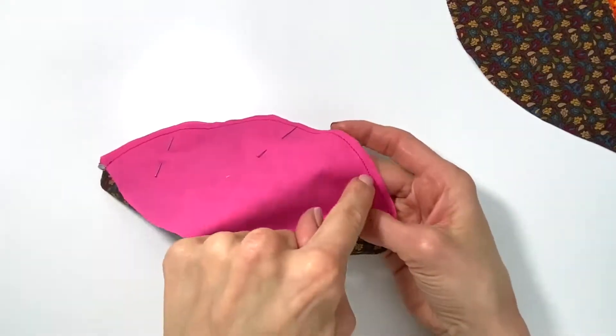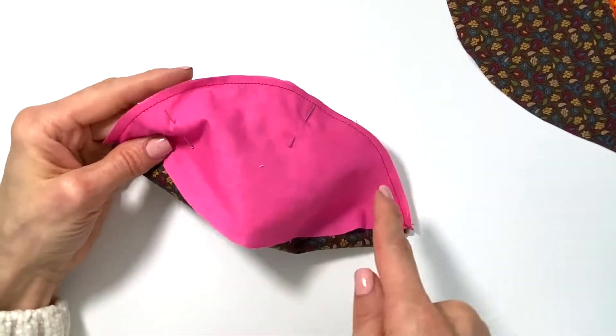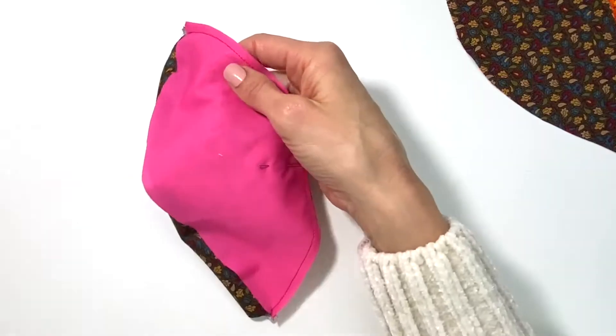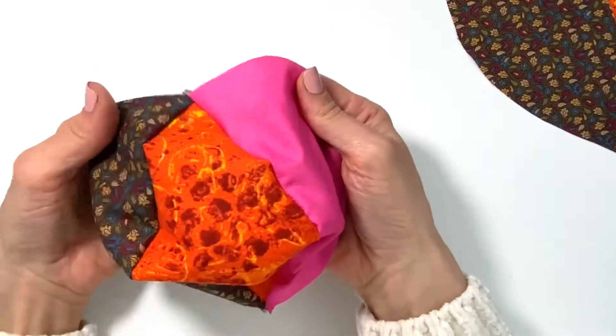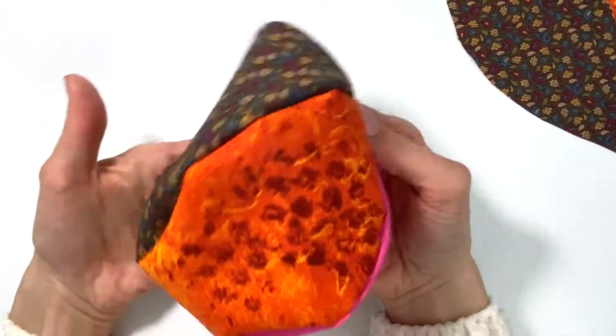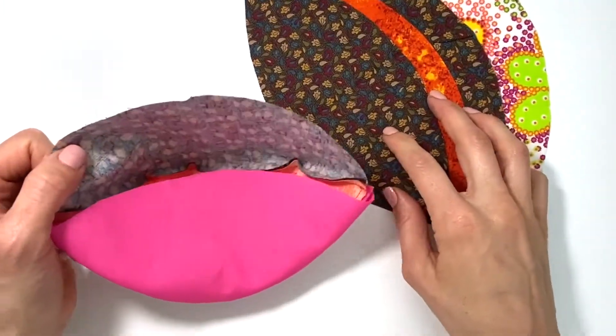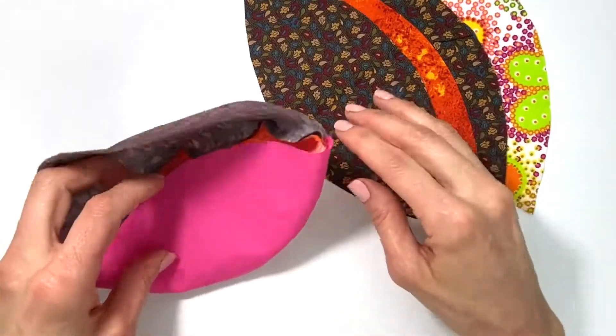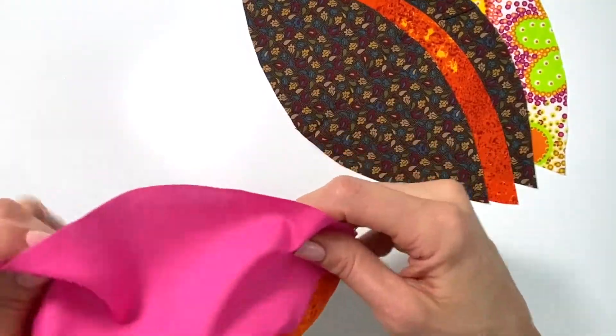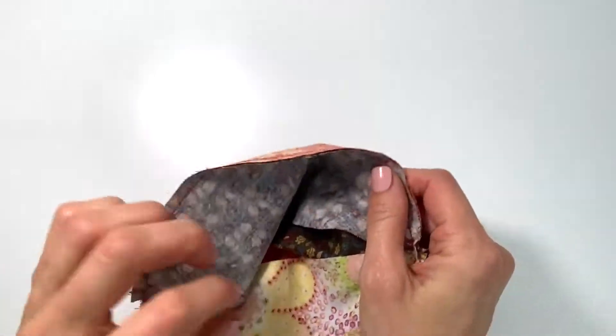I've gone ahead and sewn this arc here as well, and you can see as you're working your way around that the ball is starting to form. I'm going to continue all of them until I have them all attached. I'm going to do the same exact process and keep going around.